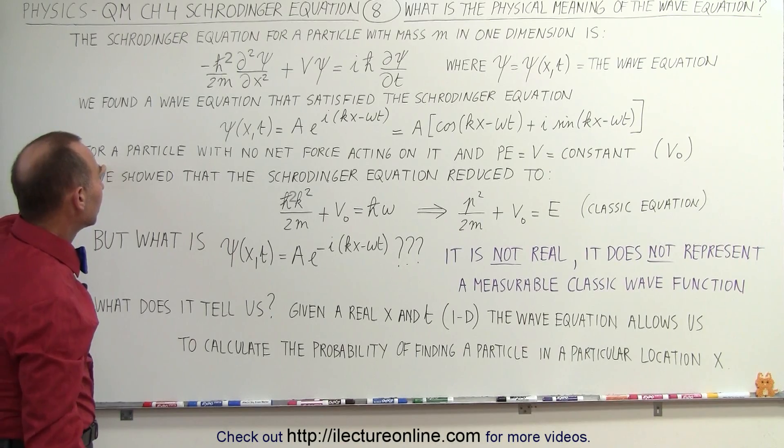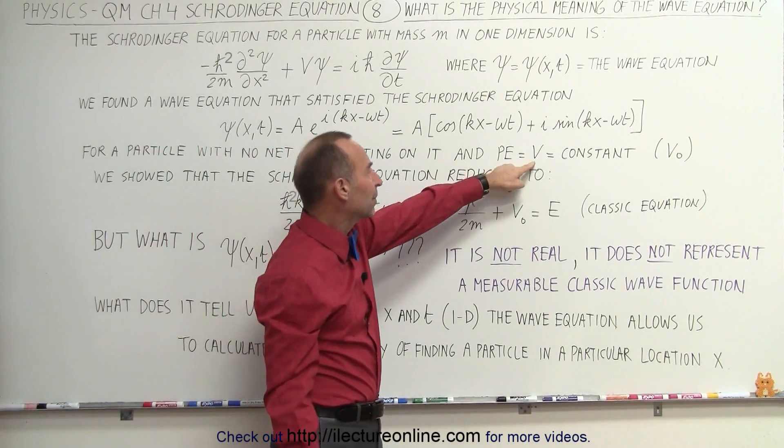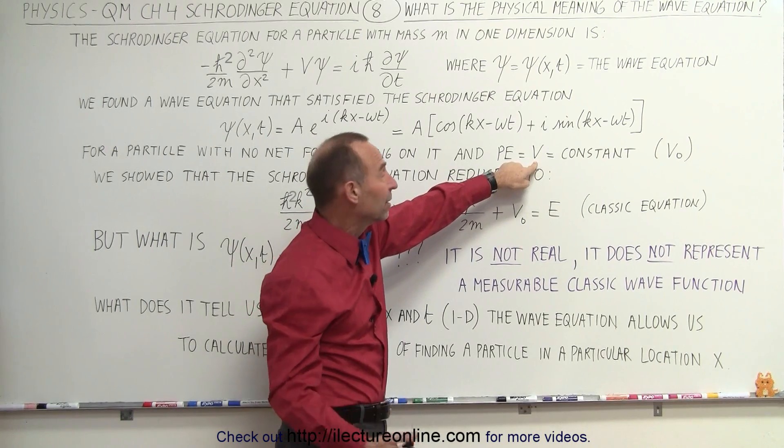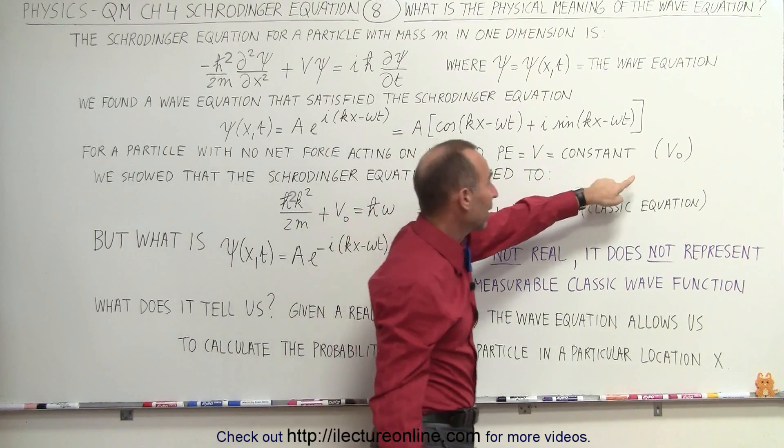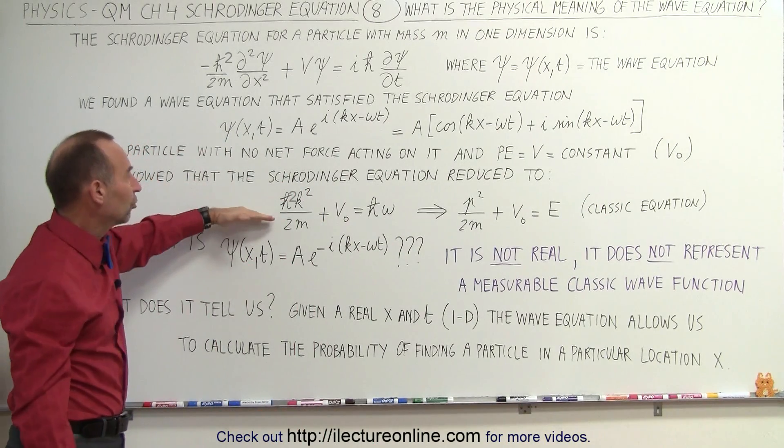So for a particle that had no net force acting on it, and assuming then that the potential energy, which we call V in this equation, is constant, so we write it as V sub naught, the Schrodinger equation then reduces to this format.